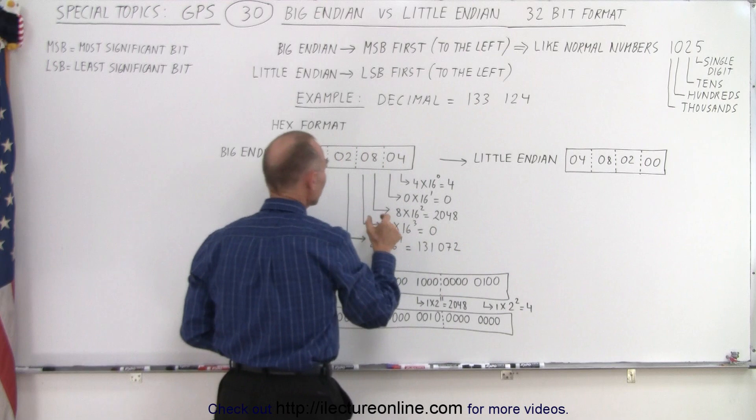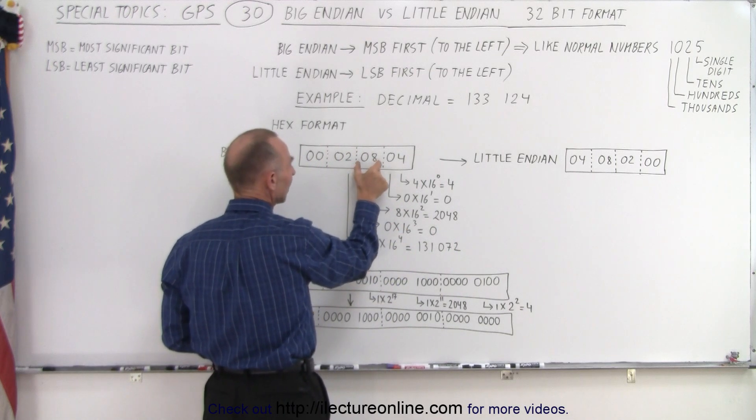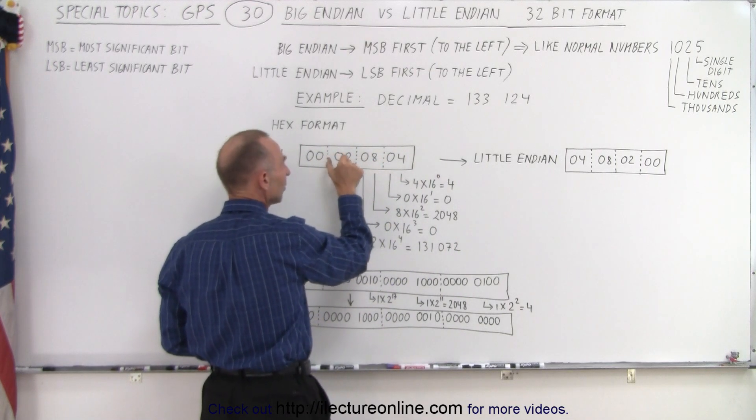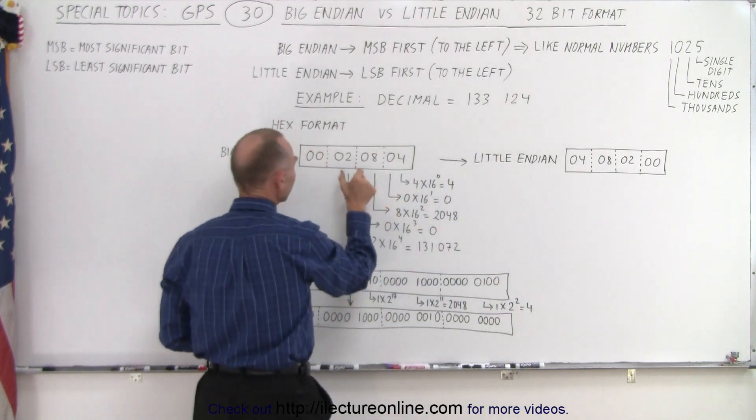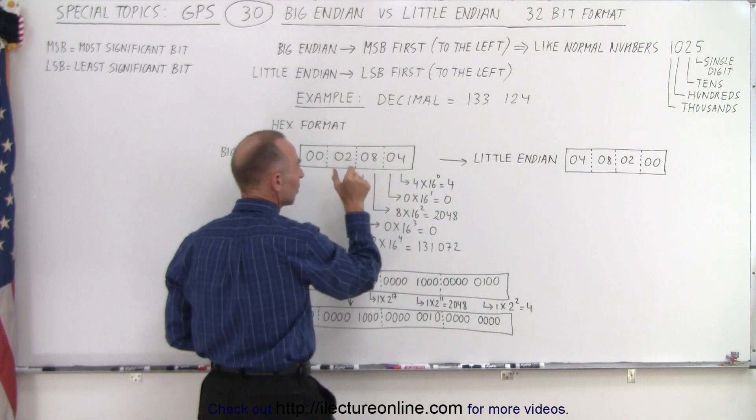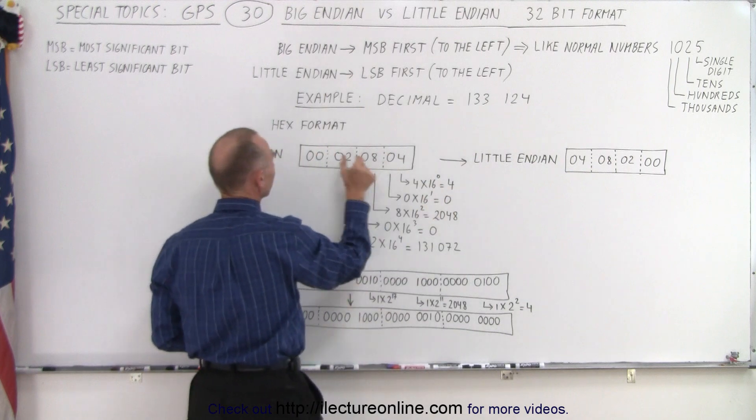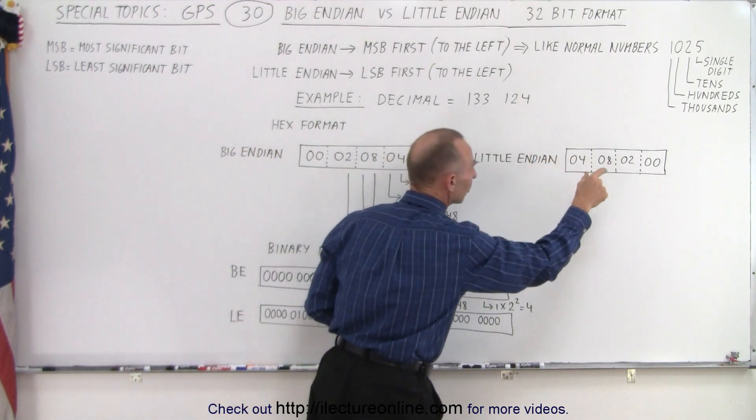That becomes 0,4. We take the next eight bits started from the right, we move that in the second position. Then we take the next eight bits and move that into the third position and the next eight bits and move that in the fourth position.